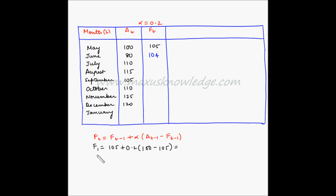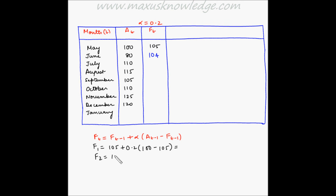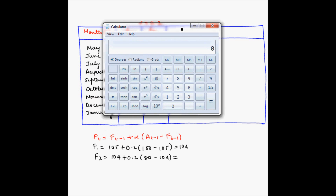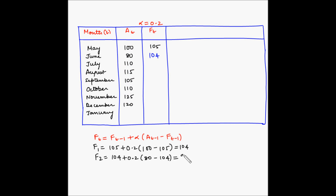Next, for July, the forecast equals the forecast for June which is 104, plus 0.2 times (80 minus 104). So 80 minus 104 multiplied by 0.2 plus 104 gives us 99.2, which can be rounded off to 99.